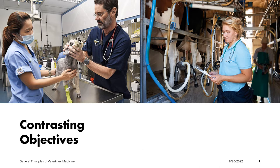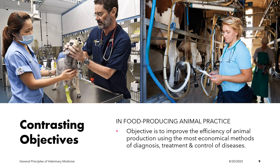Meanwhile, in food producing animal practice, the objective is to improve the efficiency of animal production using the most economical methods of diagnosis, treatment, and control of diseases. The word 'most economical' is emphasized because food producing animals have a fixed economic value, as compared to companion animals.